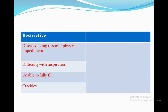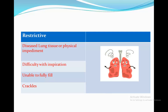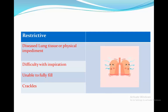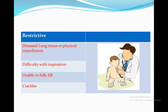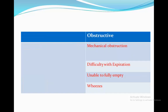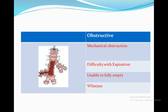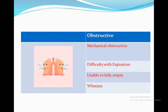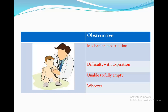In restrictive diseases, they have either a diseased lung, such as lung fibrosis, or a physical impediment. And because of this, the lungs are usually unable to expand and fill with air properly during inspiration. When we auscultate these patients, we tend to hear crackles. In obstructive diseases, there is a mechanical obstruction, like a constricted bronchi in asthma. This makes it difficult to exhale, and thus the lungs are unable to fully empty. When we auscultate these patients, we hear a wheeze.